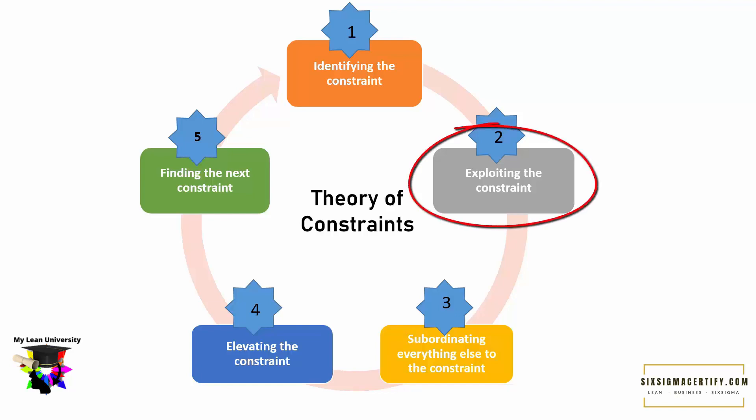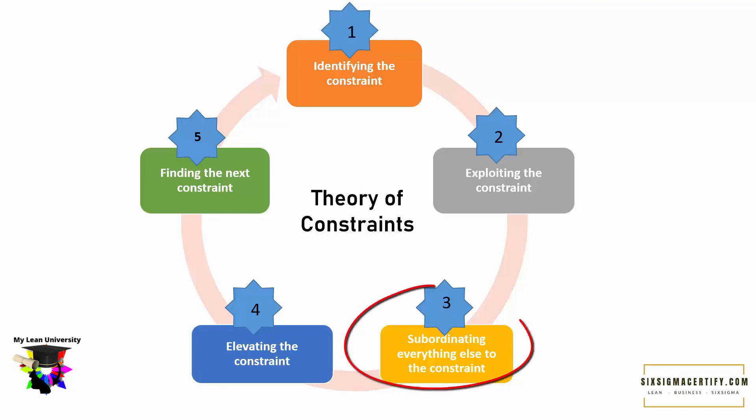The second step is exploiting the constraint, where we check whether the bottleneck is operating at its maximum capacity. If it is not, we try to change the process so that it operates at maximum capacity. The third step is subordinating everything else to the constraint, which is generally the communication part where we communicate about the bottlenecks to all subordinates.